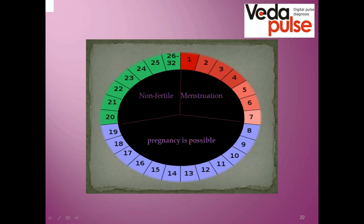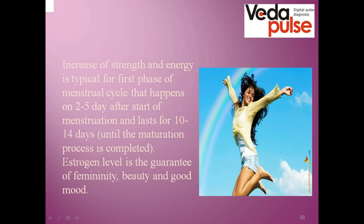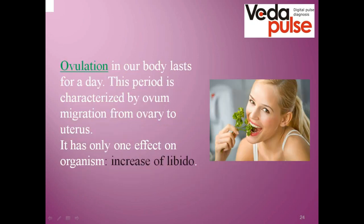Hormonal background changes affect the way a woman feels. An increase of strength and energy is typical for the first phase of the menstrual cycle, happening around the 2nd–5th day after the start of menstruation and usually lasting 10–14 days until complete maturation of the ovum. Estrogen level is the guarantee of femininity, beauty, and good mood. Then comes the middle of the cycle — ovulation — which in the body lasts for a day. This period is characterized by ovum migration from the ovary to the uterus and is associated with an increase in libido.